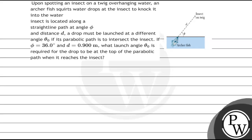Hello students. Let us read the question. Upon spotting an insect on a twig overhanging water, an archer fish squirts a water drop at the insect to knock it into the water. The insect is located along a straight line path at an angle phi and distance d. The drop must be launched at a different angle theta-0 if its parabolic path is to intersect the insect. If phi equals 36 degrees and d equals 0.9 meters, find the launch angle theta-0 required for the drop to be at the top of the parabolic path when it reaches the insect.